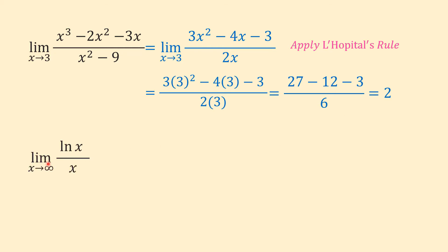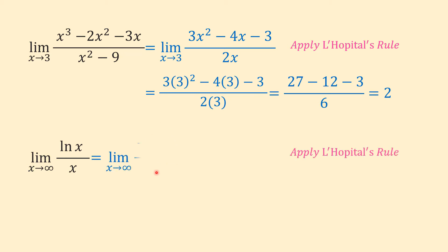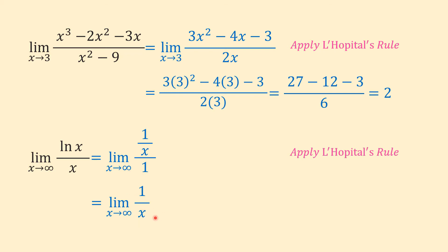Another example: find the limit of ln(x) over x as x approaches infinity. We have ln(∞) over ∞, which is ∞/∞ — an indeterminate form — so we can apply L'Hôpital's rule. The derivative of ln(x) is 1/x and the derivative of x is 1, giving us 1/x over 1, which simplifies to 1/x. As x approaches infinity, 1/x approaches 0. So the value of this limit is 0.